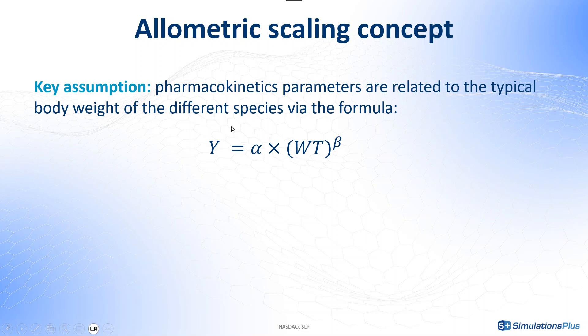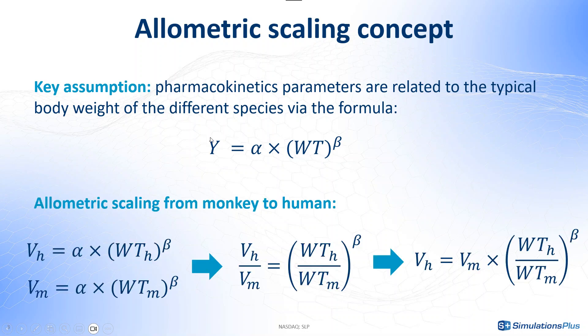For this, I will use the allometric scaling assumption that states that parameters are related to the typical body weight of the species via this power law formula. If I apply this formula for humans and for monkeys, take the ratio and reorganize it, I see that I can calculate the volume in humans using the volume in monkeys, the ratio of body weights, and an exponent beta.